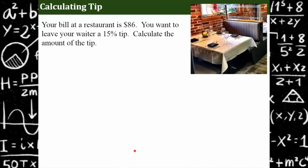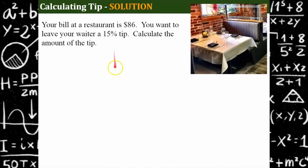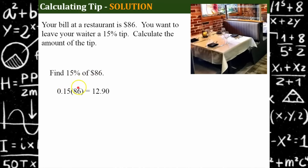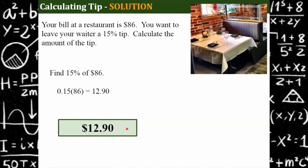All right, let's talk about calculating tip. We're going out to eat and the bill at the restaurant is $86. You want to leave your waiter a 15 percent tip for their service. I would like you to calculate the amount of the tip. Go ahead and pause. Welcome back. Let's see how you did. We're just calculating our tip, not the total cost of the bill. So we're going to find 15 percent of our $86 bill. Fifteen percent written as a decimal multiplied by 86 is $12.90. So the tip that we're going to leave for the waiter is $12.90.